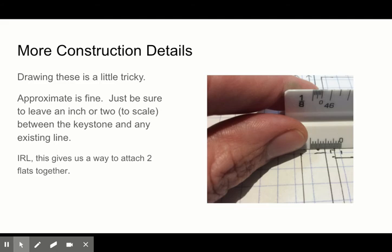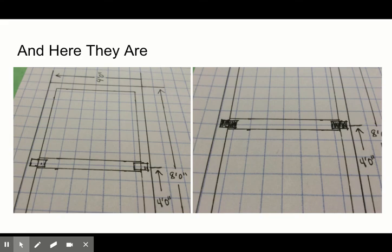So approximate for the measurement is fine. This is a standard thing that gets built in scene shops. So you just need to be sure that it shows that it's offset from the edge of the flat so that we could attach those two flats that are sitting next to each other together on the stage. So again three inches by five inches. We shade them in so we can see that it's a different piece of wood.